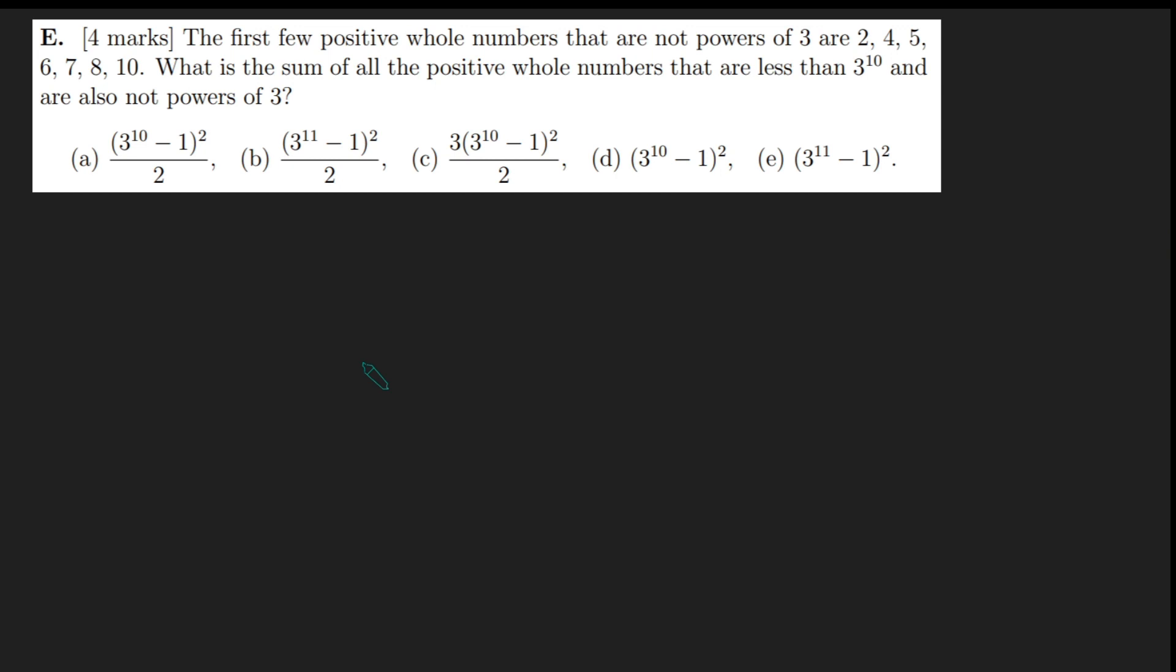The first few positive whole numbers that are not powers of 3 are 2, 4, 5, 6, 7, 8, 10 and so on. What is the sum of all the positive whole numbers that are less than 3 to the power of 10 and are not powers of 3?